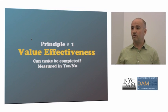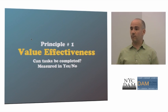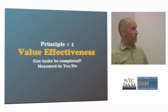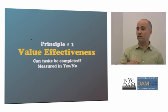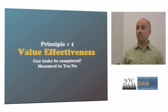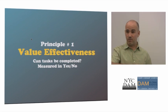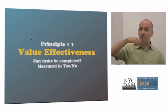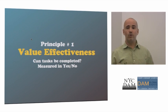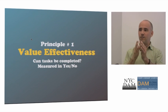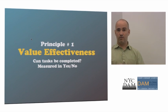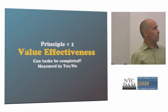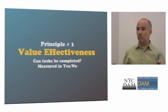Effectiveness is very simple: can tasks be completed? You all made it here tonight — there's effectiveness. With any kind of UX, the first question is can people complete what it is they want to do? Really nothing else matters if they can't do what they want to be able to do. It's measured very simply: yes or no. And if you asked everyone a question about effectiveness, there would be a high degree of agreement on whether it's been achieved.